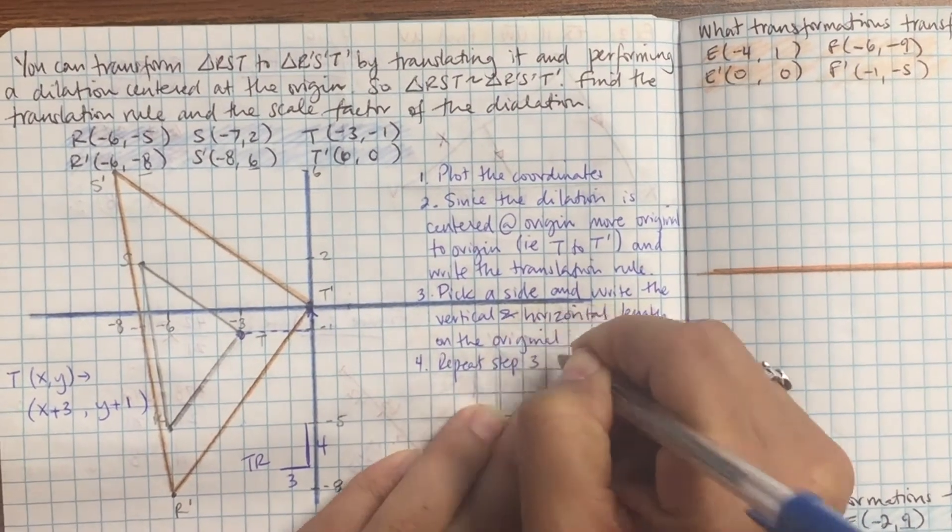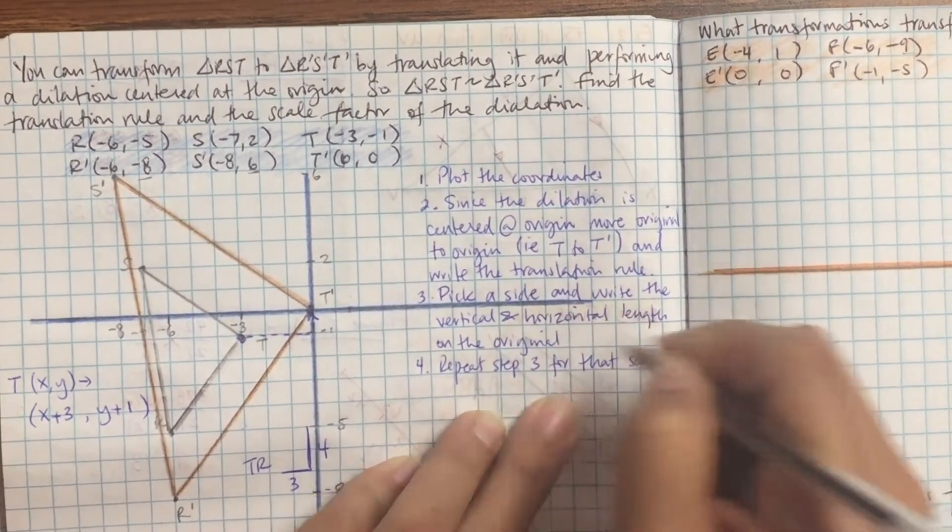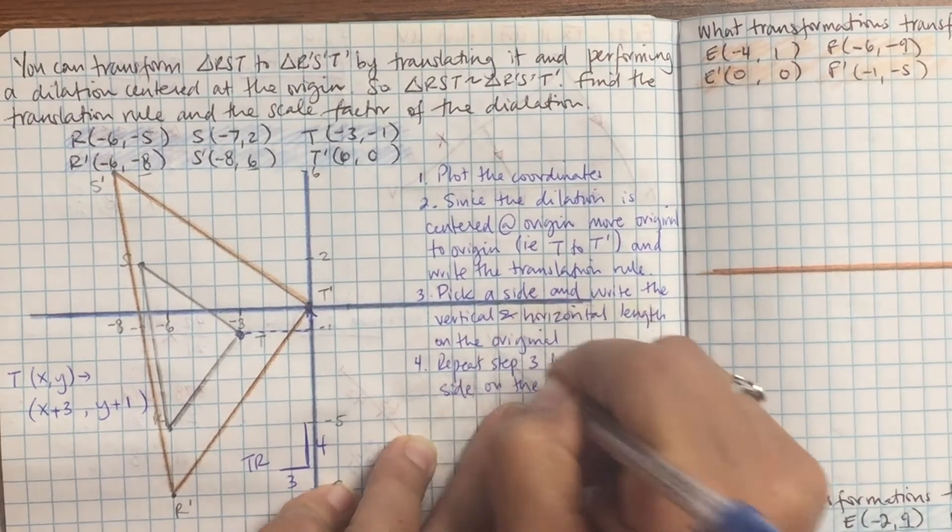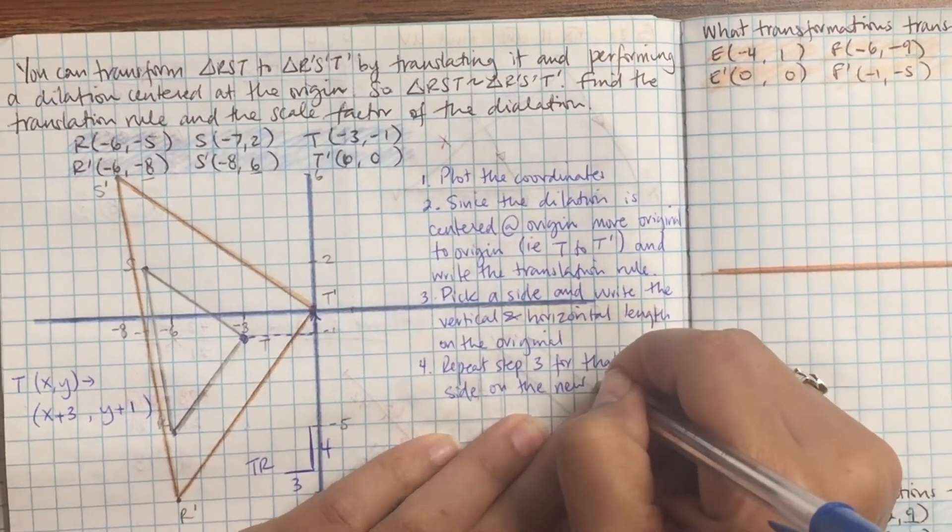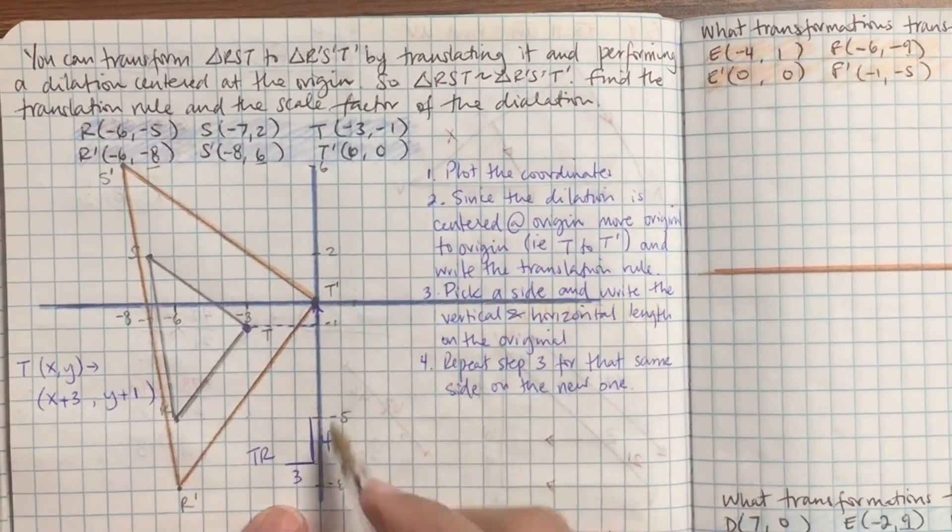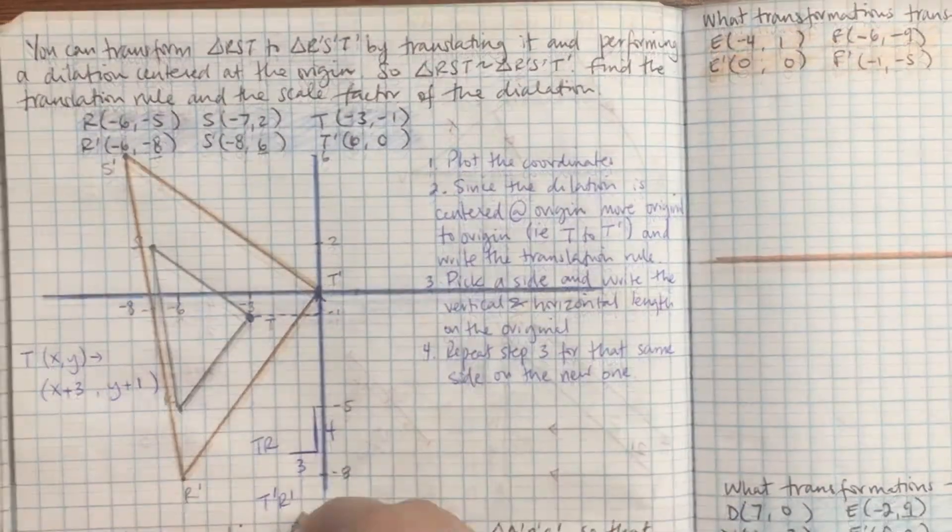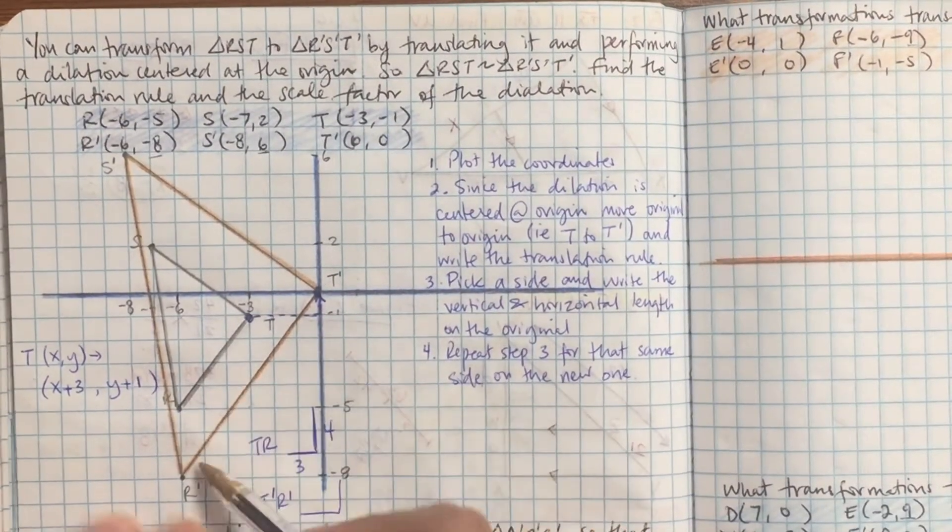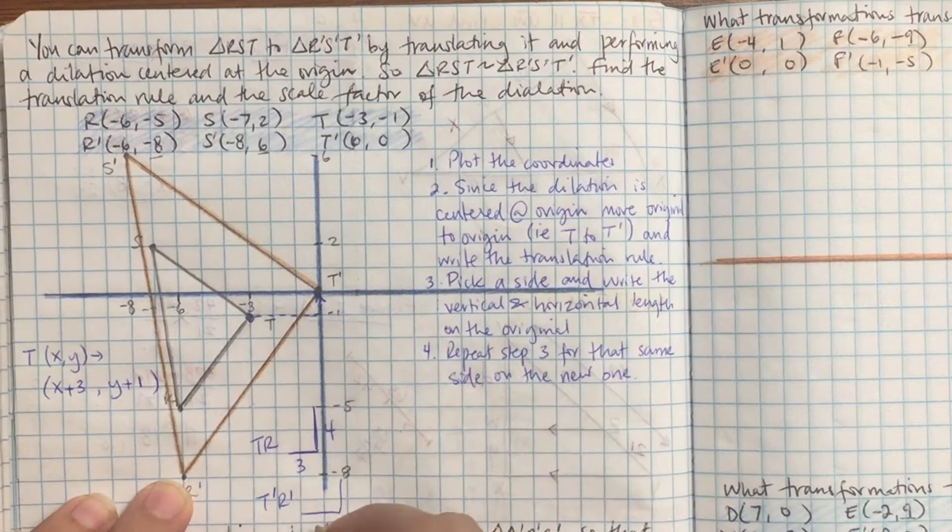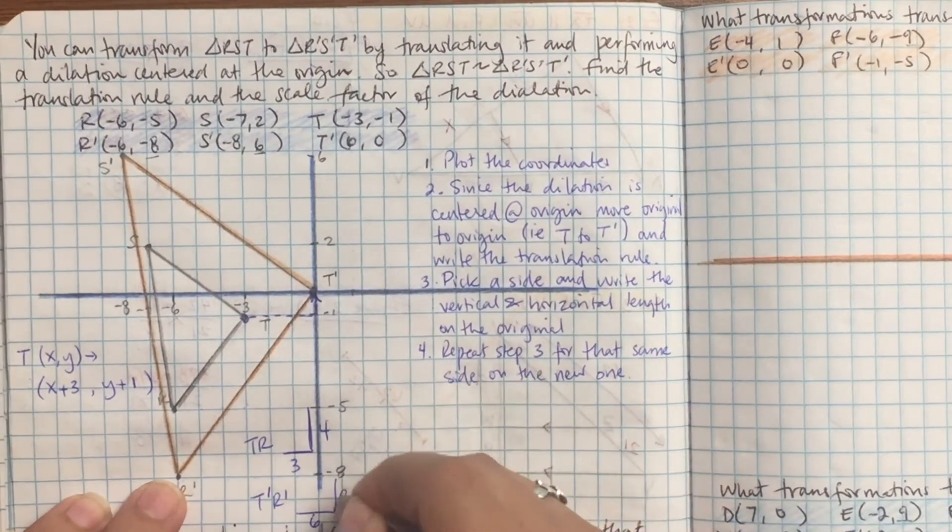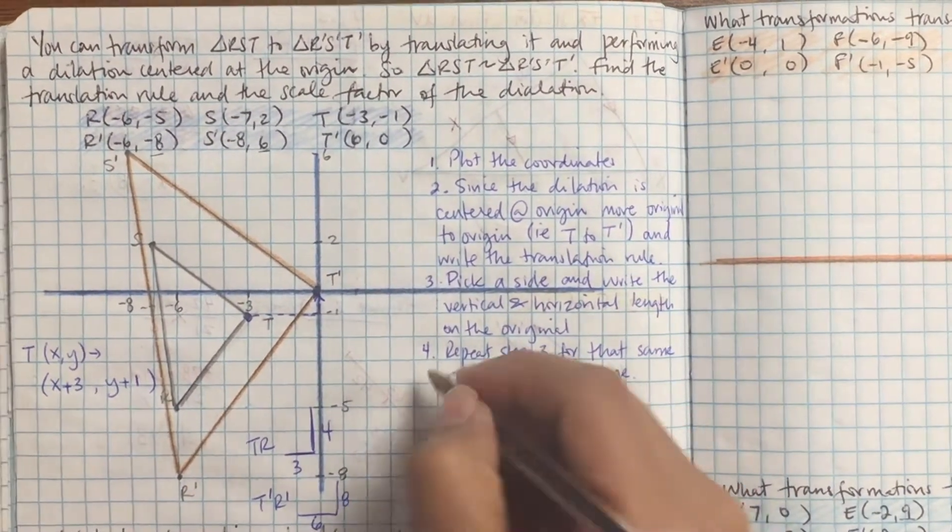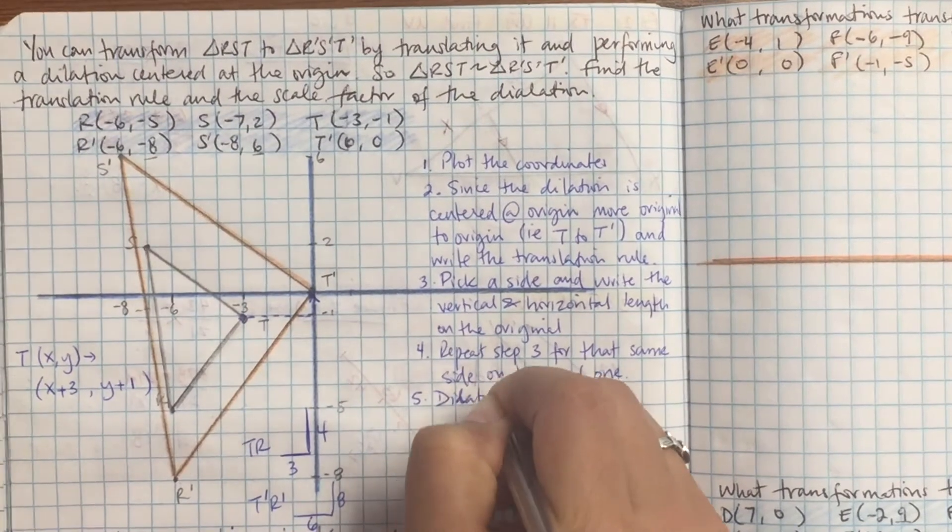Step 4, repeat step 3 for that same side on the new one. So repeat that exact same step, but on the new one. So now T prime and R prime. So T prime and R prime is 6 over and up 8.